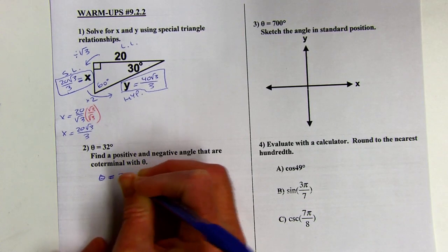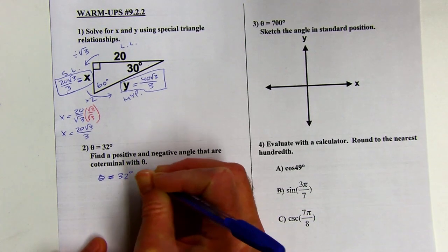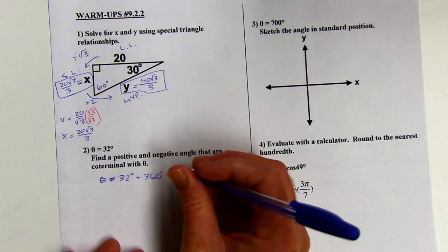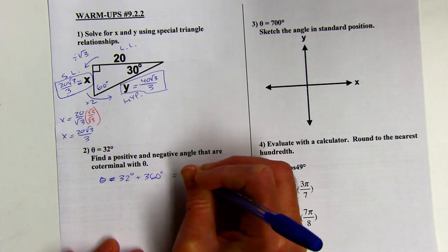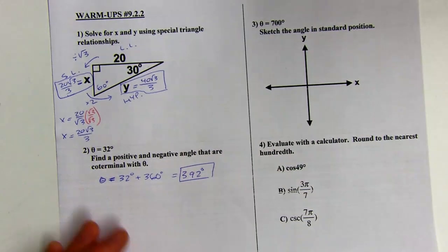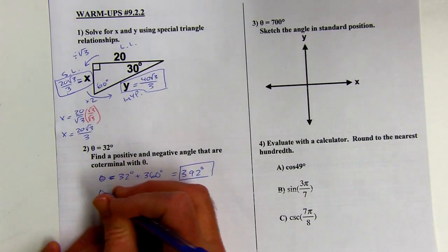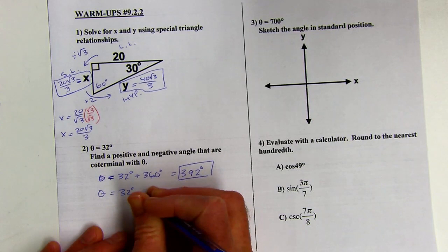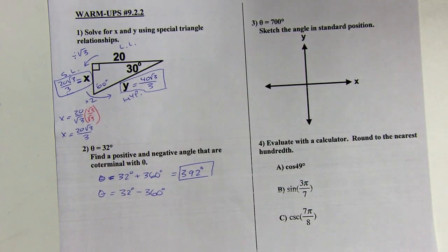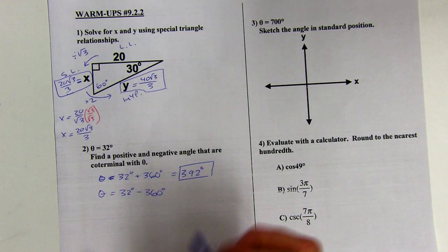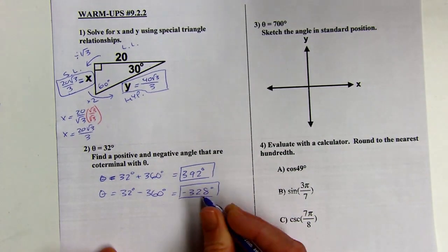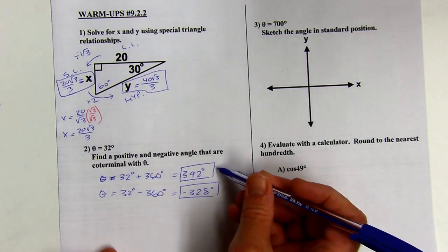So all I have to do to get other angles that are coterminal is add or subtract multiples of 360. So I've got 32 degrees. If I want a positive angle, I could add 720 or any multiple of 360, but I'll just add 360 once. That's going to put me at 392 degrees. So there's a positive angle that's coterminal. If I want a negative one, I'm going to have to subtract from the 32 degrees to get into the negatives. And I'm just going to subtract one multiple of 360 here, which is going to put me at negative 328. Again, I could keep subtracting 360s to get other options that would work or keep adding 360s here.